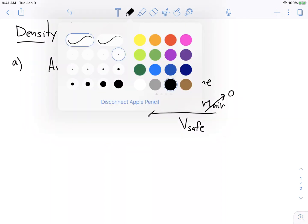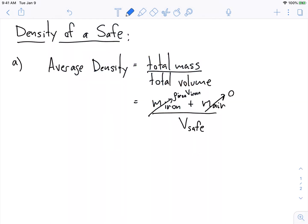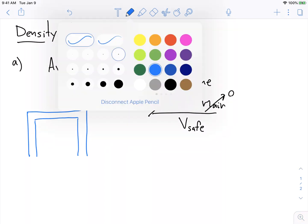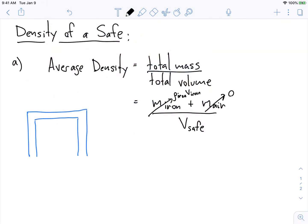And so I just like to draw the safe quickly here. So if I draw it like this, I'm just going to draw the outside and here's the inside wall. The safe is a cube, right? It has 1.2 meters on the outside and it's 1.1 meters on the inside.